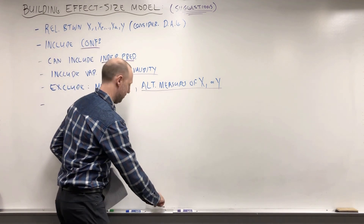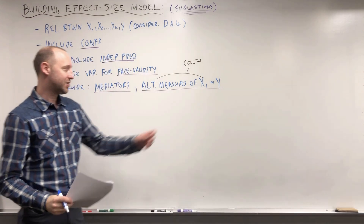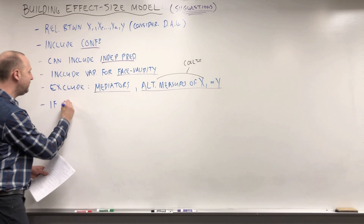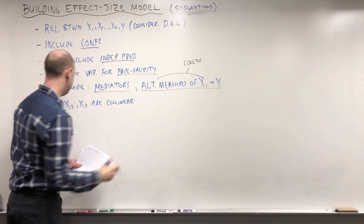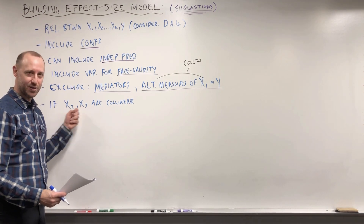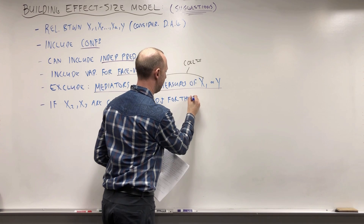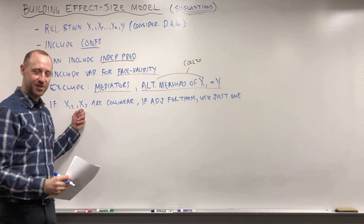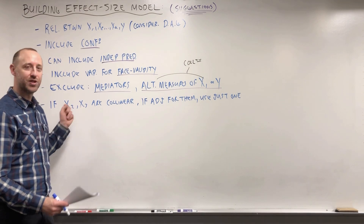Alternate measures of X1 are often thought of as collinearity. If a variable is so highly associated with X1 that it's nearly inseparable, don't include that in the model. Similarly, if X2 and X3 — other variables in your dataset — are so highly associated that they can't be separated, and you need to adjust for them, use just one, not both.